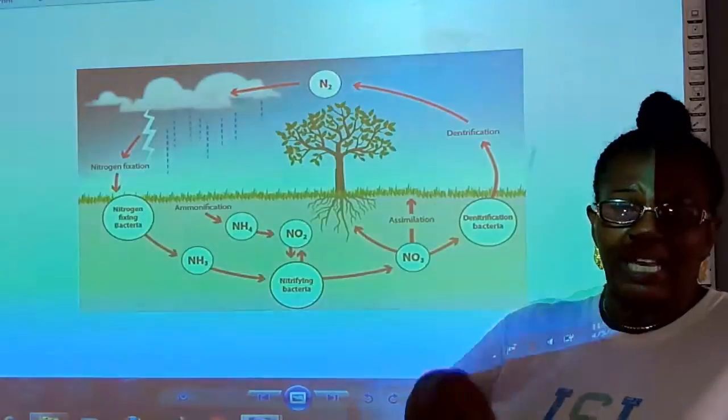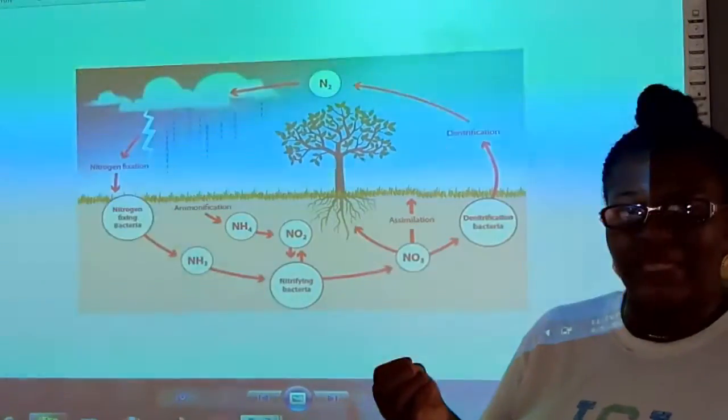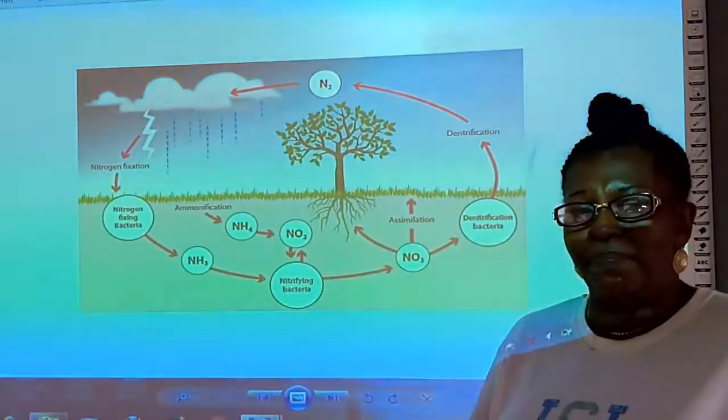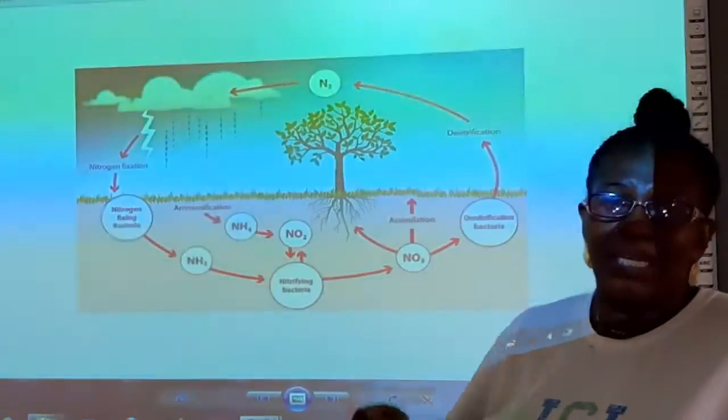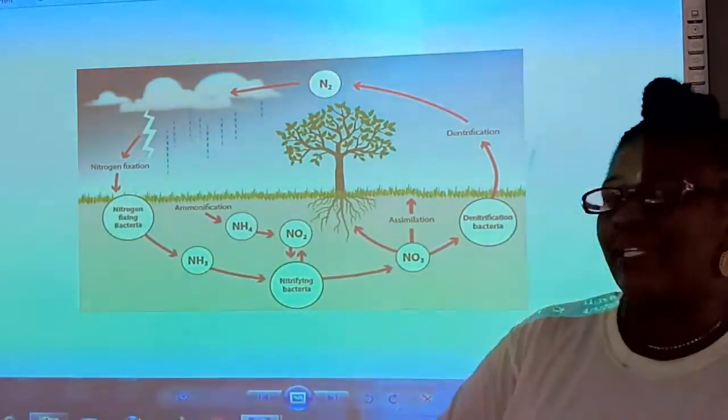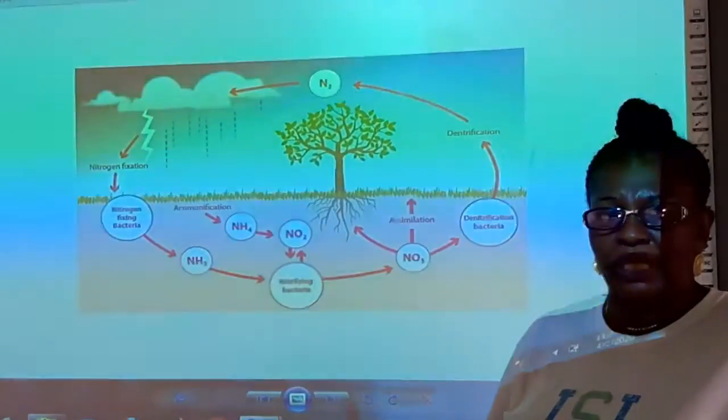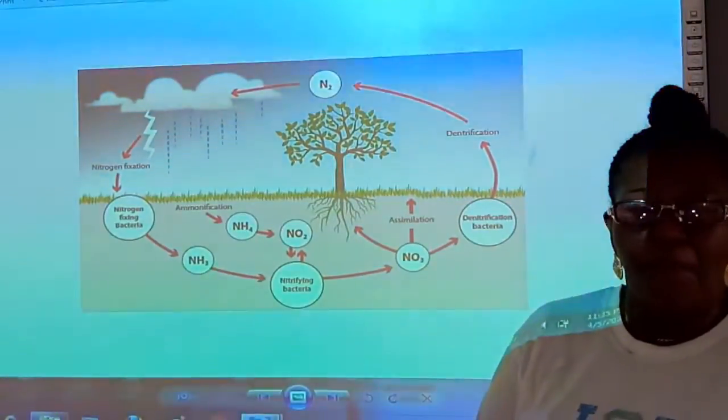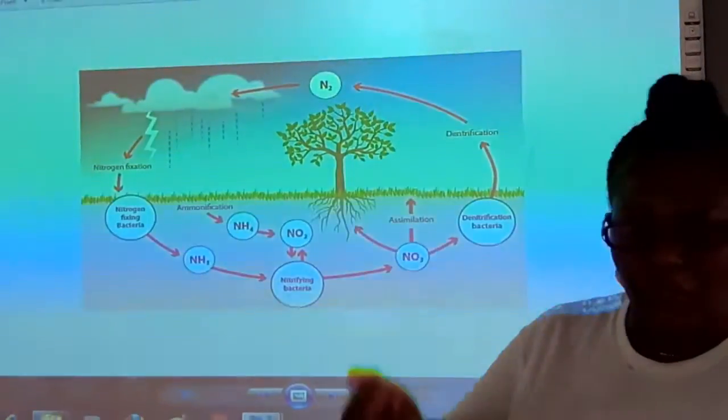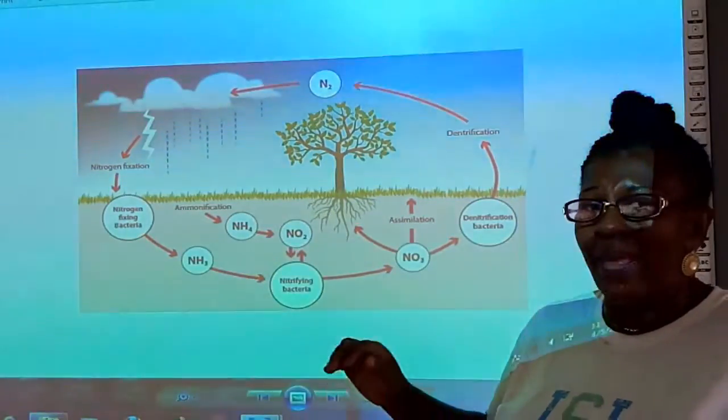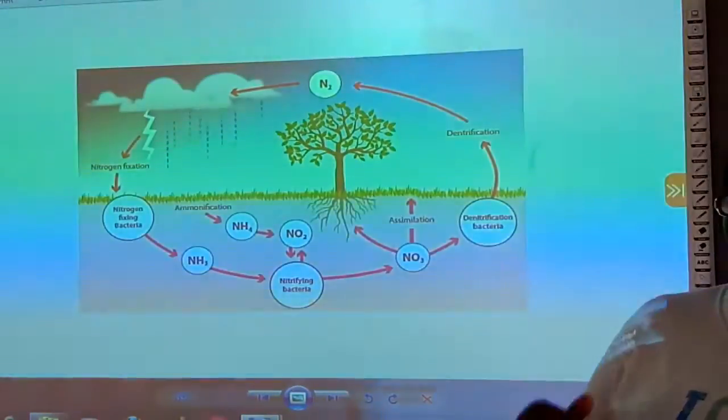It has been taken up by the plant and becomes plant protein. The animal eats the plant and it becomes animal protein. Some day both the plants and the animals will die. And when they die, that's the stage we call putrefaction.